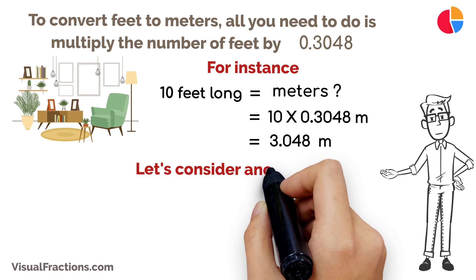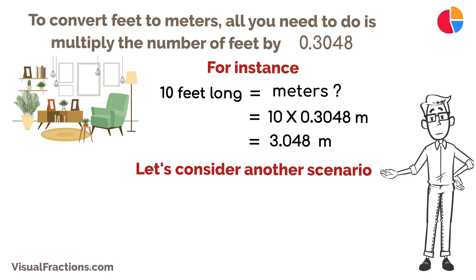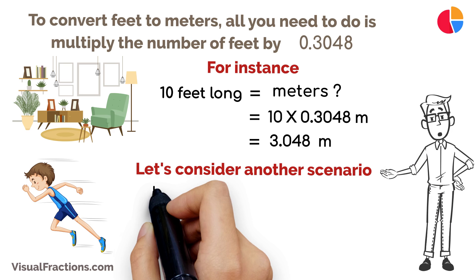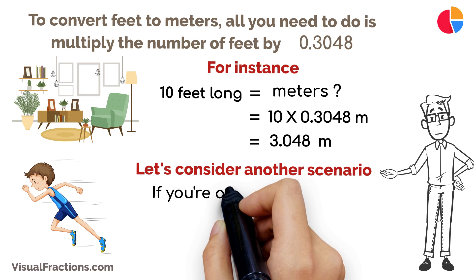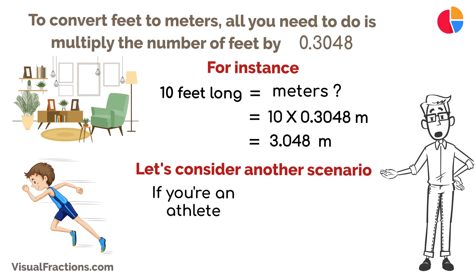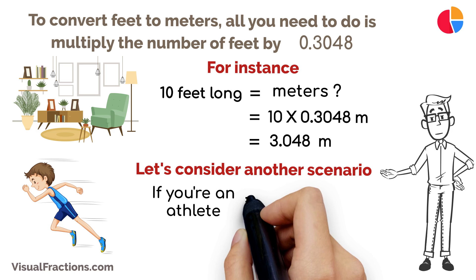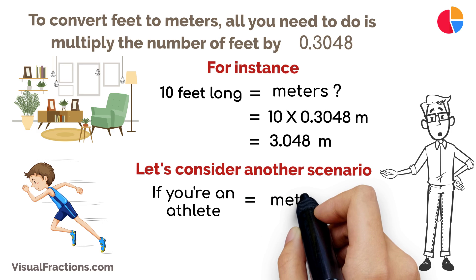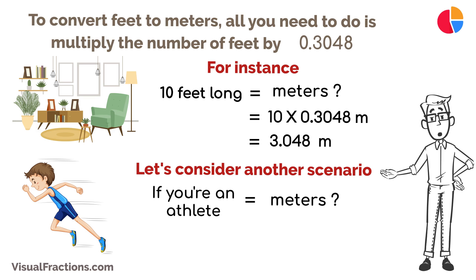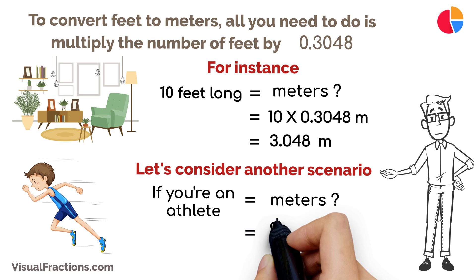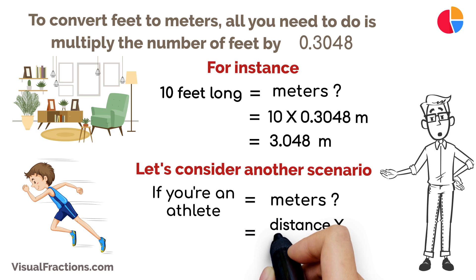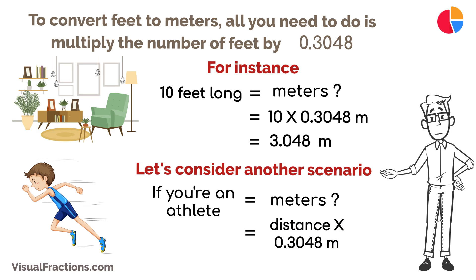Let's consider another scenario. If you're an athlete used to running distances measured in feet and need to convert it to meters for a competition abroad, it's straightforward — just multiply the distance in feet by 0.3048 to get the equivalent in meters.